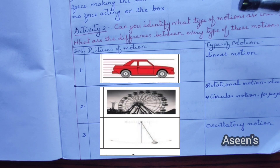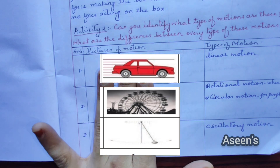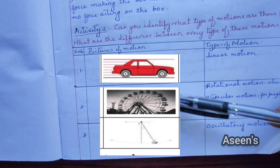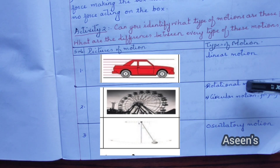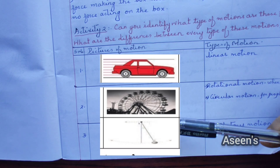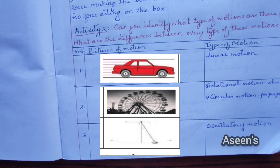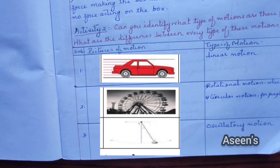Moving on to activity 2, the question states: can you identify what type of motions are these? What are the differences between every type of these motions? There are 3 pictures given towards my left hand side and the answers are on my right hand side. For the second one — the giant wheel — I have mentioned 2 types of motion depending on what part we are referring to. If you are referring to the wheel itself, it is rotational motion. If you are referring to the passengers riding the giant wheel, it is circular motion. The last one is a pendulum, so it is oscillatory motion. The first one is a car moving in one dimensional direction, so it is linear motion.